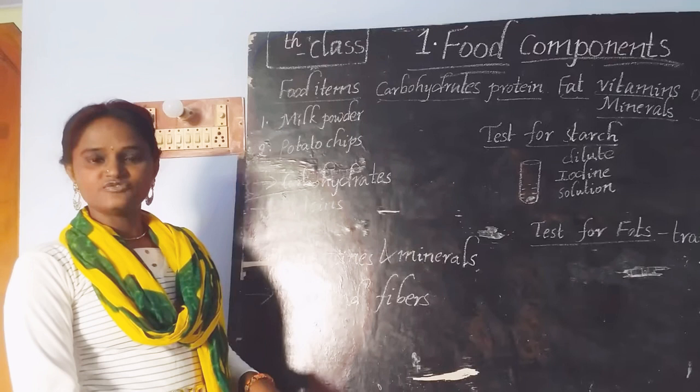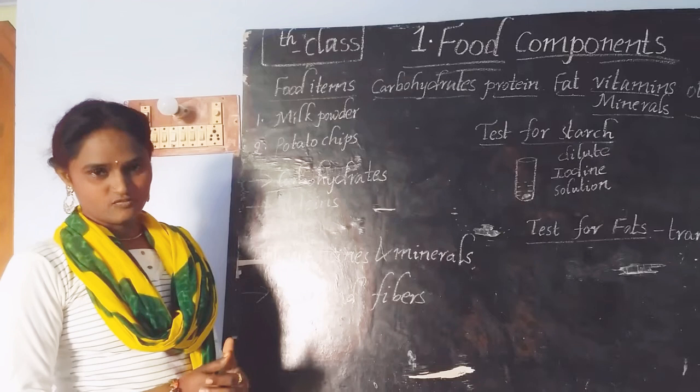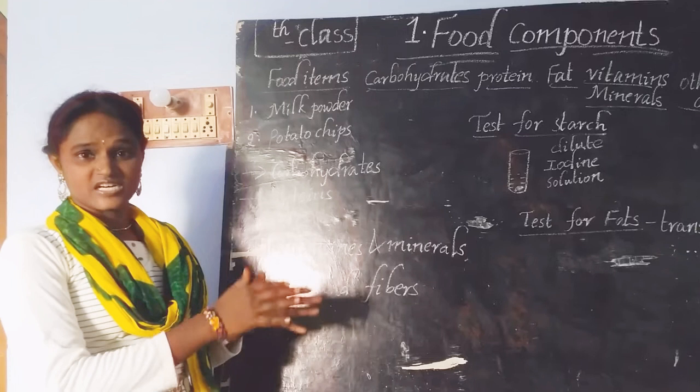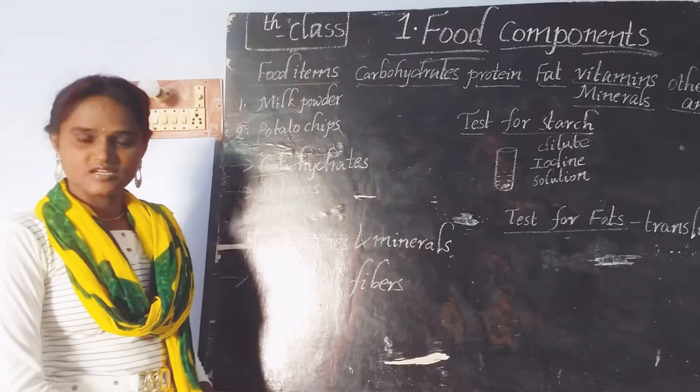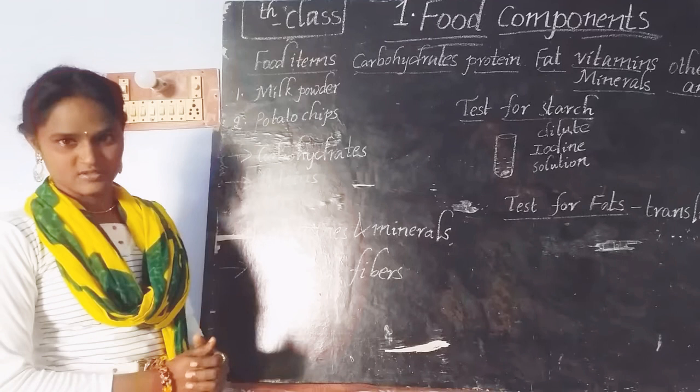We know that we eat different varieties of food in our day-to-day life. What kind of food do we eat for breakfast? We eat different varieties for lunch and also for dinner. We people won't show interest if our mother gives us the same variety of food every day — it may vary, and we like to have different varieties of tasty food.